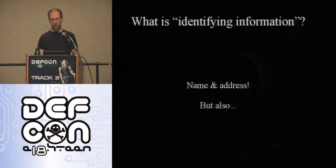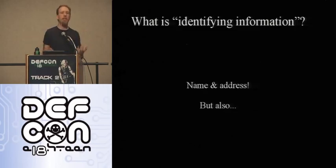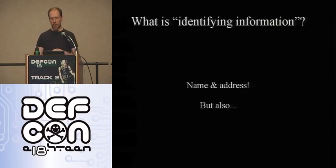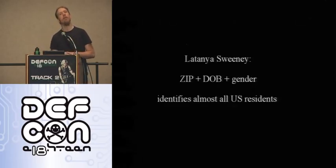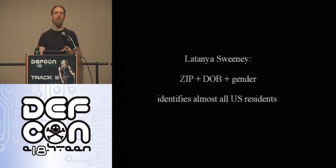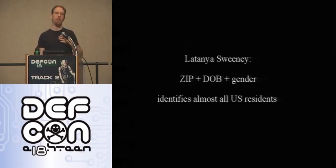Before we get to browsers, let's talk about identifying information. When we ask what kind of information identifies a person, we have some standard answers, like if I know their name and address I probably know who they are. But there are more surprising examples. There's a paper by Latanya Sweeney from the 90s showing that someone's zip code, date of birth, and gender gives about an 80% probability of uniquely identifying them.